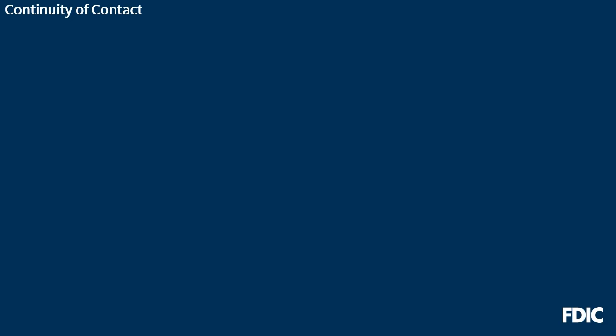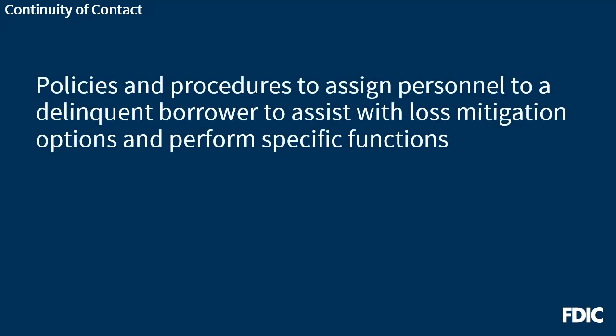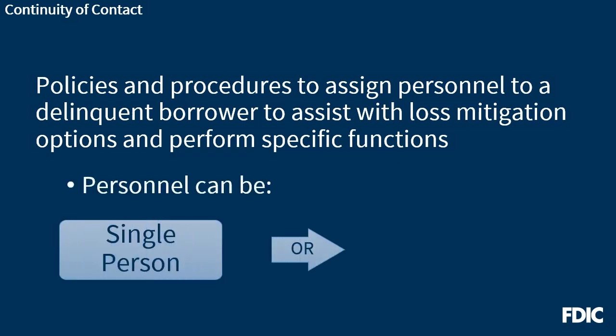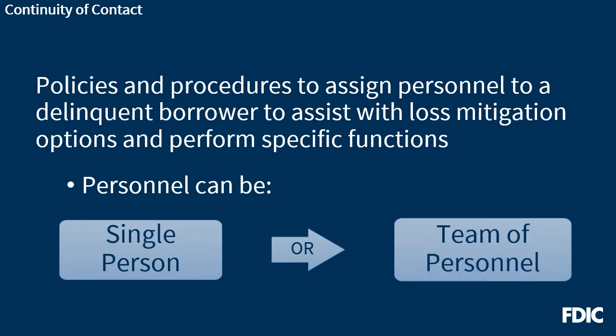The continuity of contact rules require large servicers to maintain policies and procedures to assign personnel to a delinquent borrower for various purposes, including responding to the borrower's inquiries, assisting with available loss mitigation options, and performing other specified functions. Large servicers may decide to assign a single person or a team of personnel to maintain continuity of contact, including personnel with specialized knowledge in bankruptcy law to assist borrowers who file for bankruptcy. The continuity of contact requirements are intended to make sure that borrowers receive consistent and accurate information while they are working through loss mitigation, enabling borrowers to discuss their mortgage options with trained personnel who are familiar with their situation.